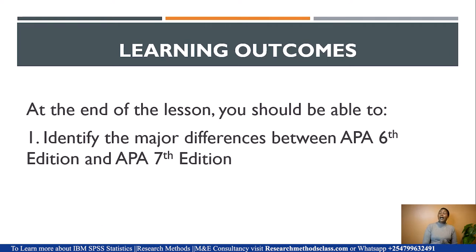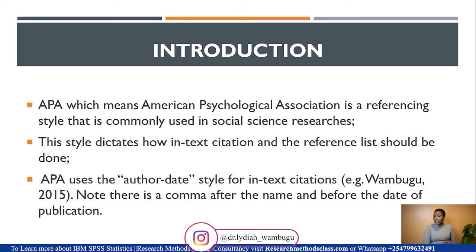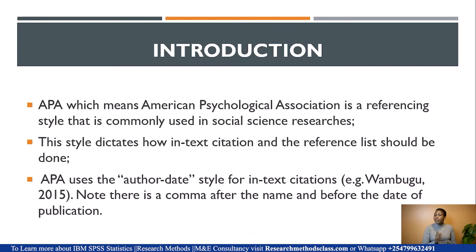Someone might be asking: what is this APA, or is there really a 7th edition? APA stands for American Psychological Association, and it is a referencing style commonly used in social science research. This style dictates how to reference in-text — what we call in-text citation — and how to write our reference list at the end of Chapter 5, once we have completed writing the thesis, project, or dissertation.